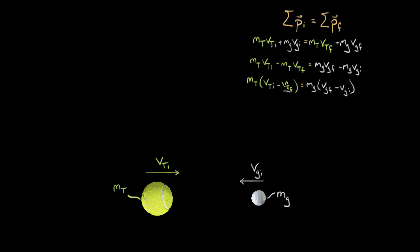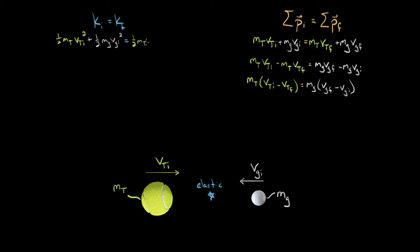Since the collision is elastic, we also use conservation of kinetic energy: one-half·mt·vti² plus one-half·mg·vgi² equals one-half·mt·vtf² plus one-half·mg·vgf². We can cancel the one-half from every term by multiplying both sides by two. Then, grouping mt terms on one side and mg terms on the other, we get mt·(vti² − vtf²) equals mg·(vgf² − vgi²).